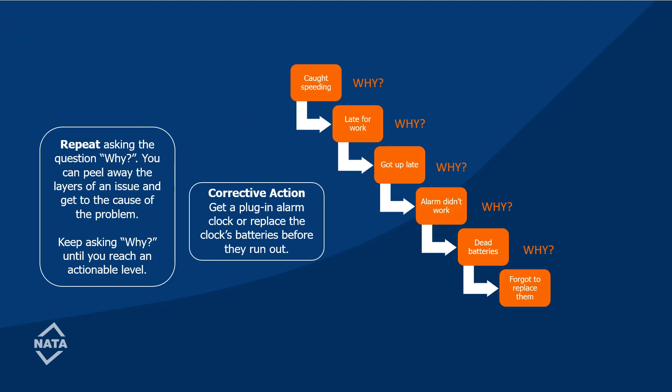The Five Whys: as you can see from the diagram, you are asked five questions, and within those five questions you should come to the ultimate answer. So if you're caught speeding — you were late for work — you got up late because your alarm clock didn't work — the batteries are dead — you forgot to replace them. So what was the ultimate cause?